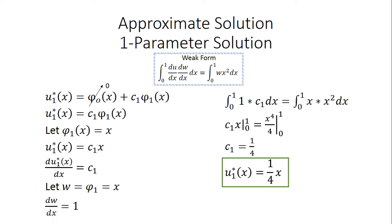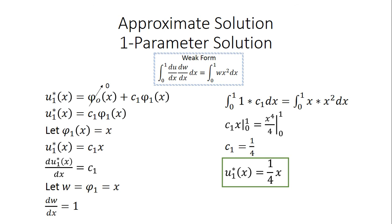Plugging all knowns into the weak form — du/dx equals c1, dw/dx equals 1, and w equals x — we integrate from 0 to 1 with w times x squared. Solving the integral and solving for c1, we find c1 equals 1/4. Plugging c1 back in, our one-parameter solution is u1 star of x equals one-fourth x.